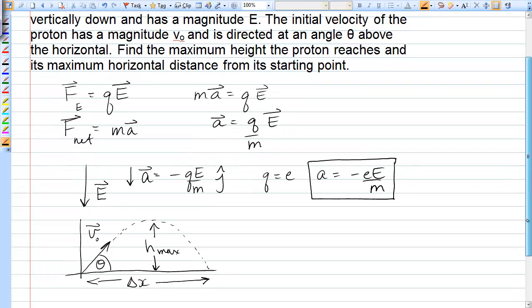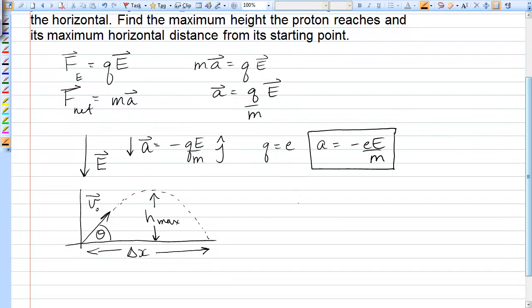So to analyze a projectile, it's two-dimensional motion, I'll split the analysis into the X and Y directions. In the X direction, the initial velocity is V0 cos theta, and in the Y direction, the initial velocity is V0 sin theta.